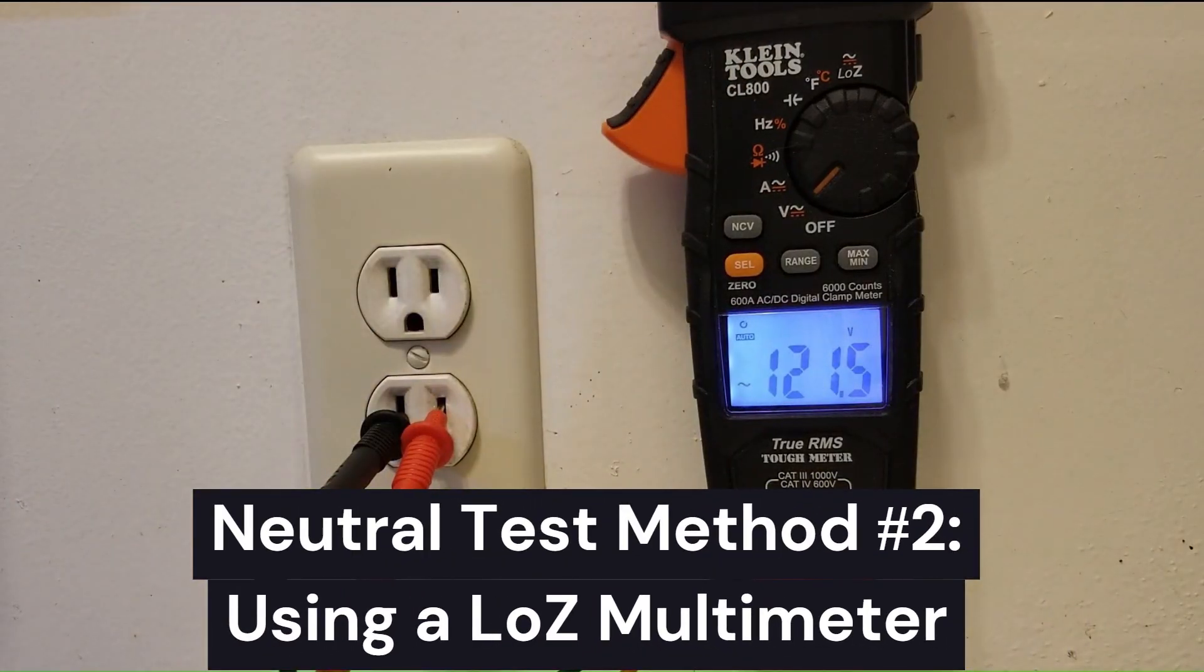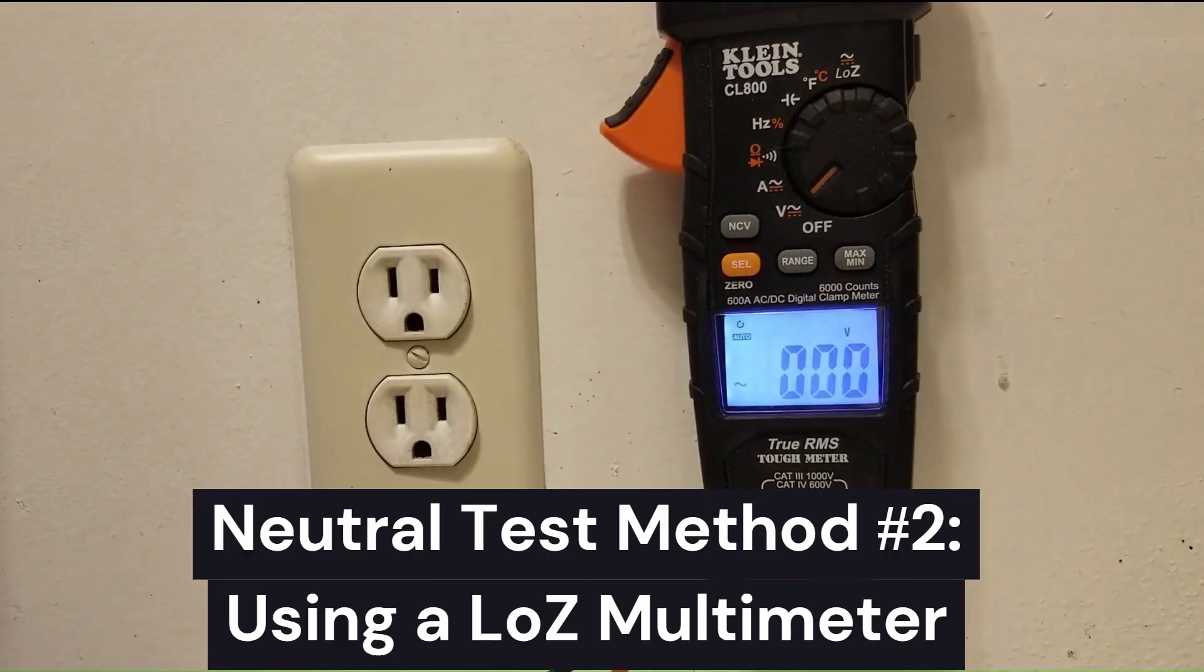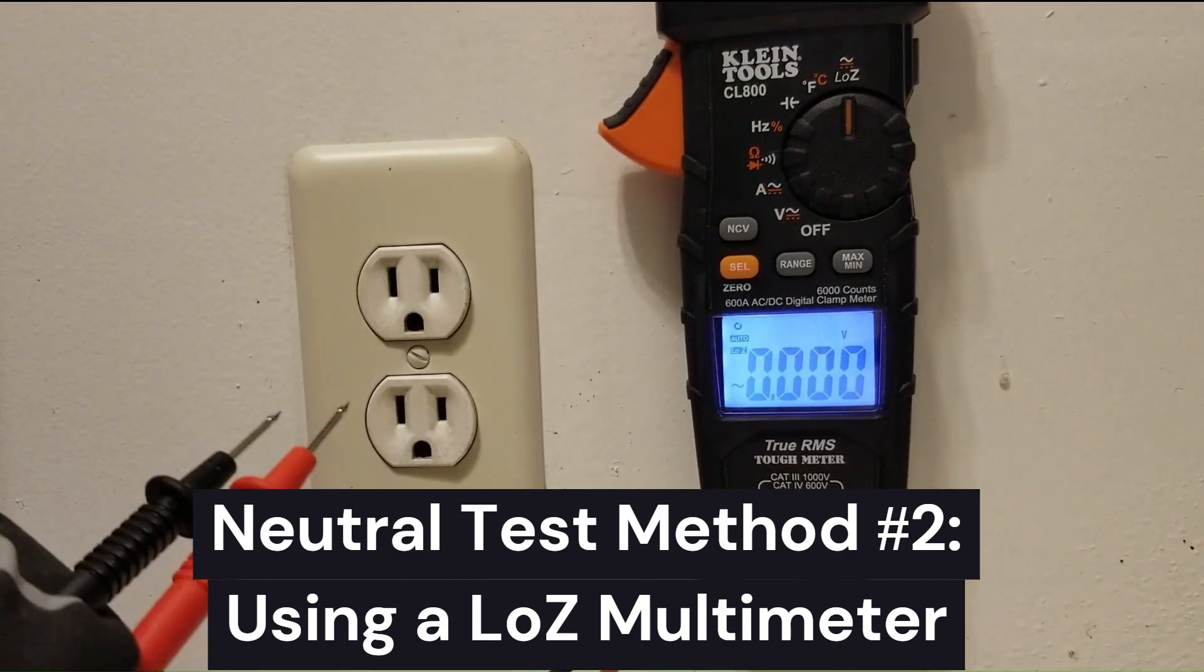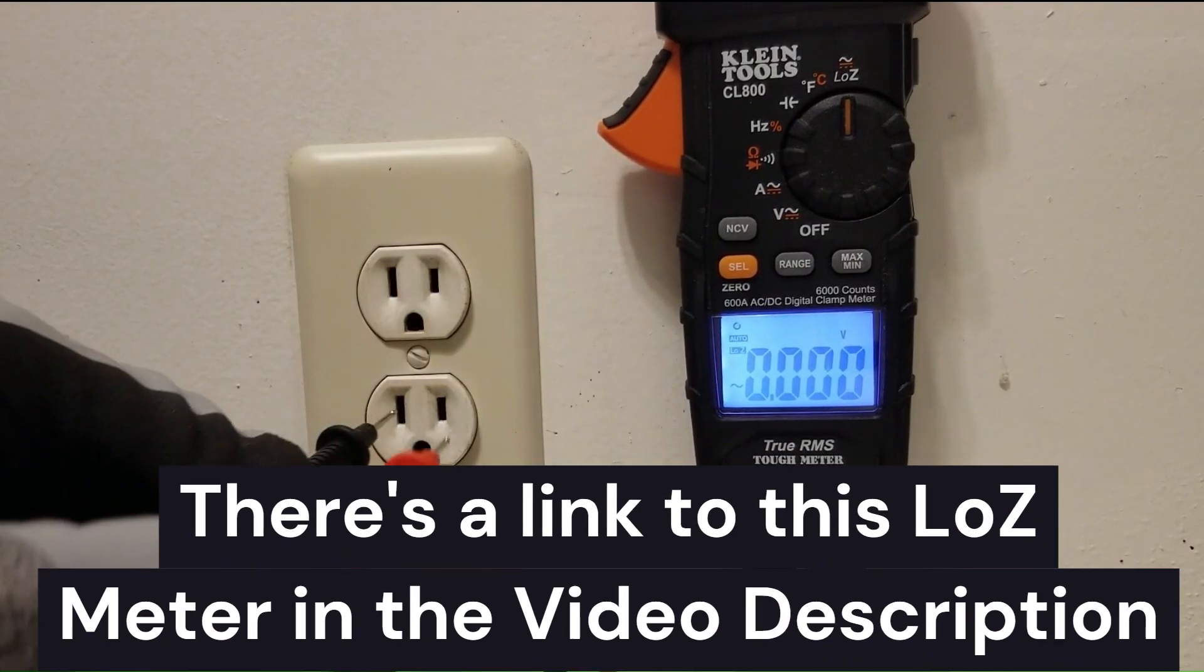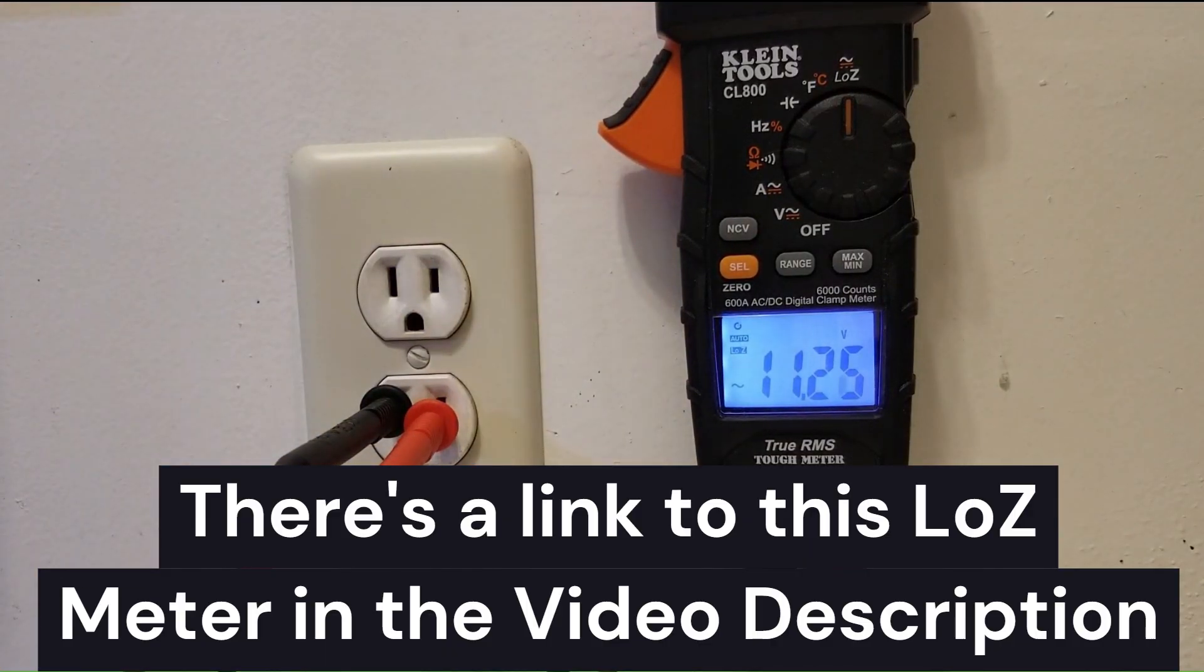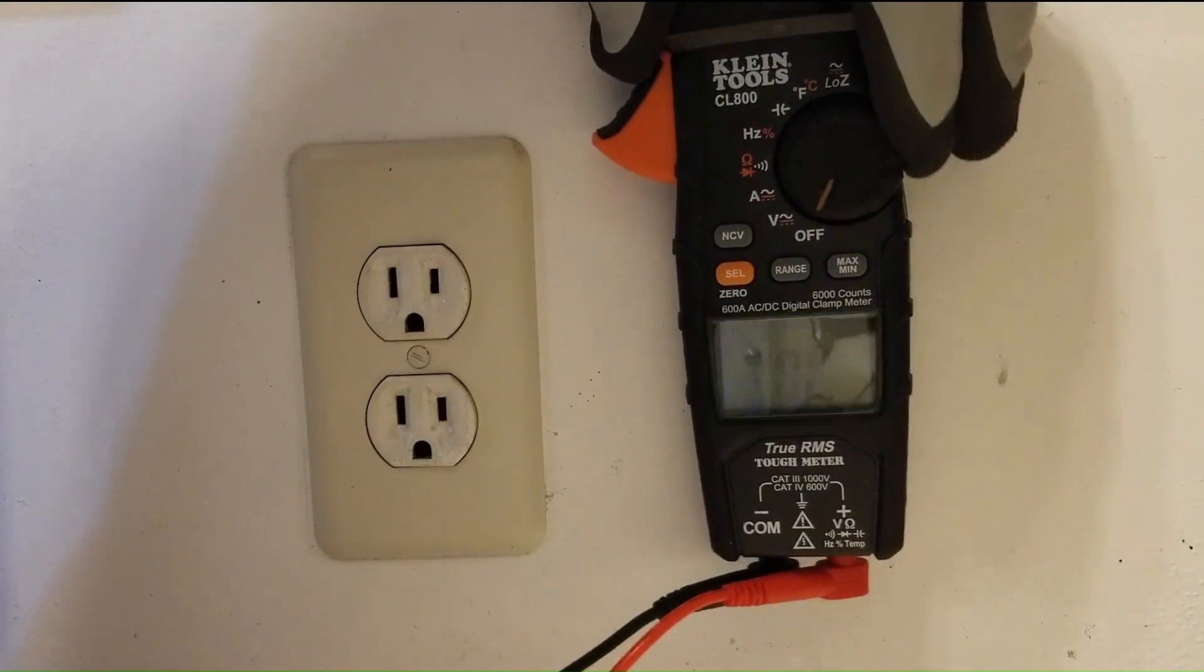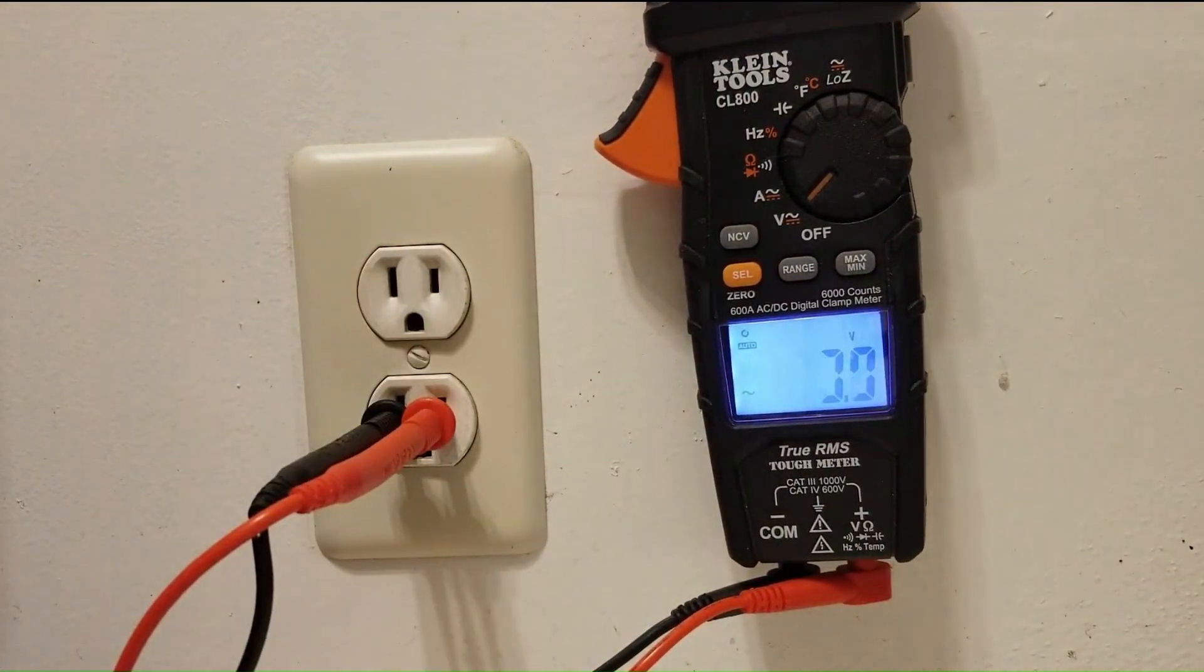So how would you test an outlet like this if you didn't know that it had an upstream loose connection that only failed under load? Well, you could use something called low Z here. I'm going to switch this to low Z mode and this inserts a resistance in the circuit, a low resistance or low impedance. That low resistance is about 3.2 kilohms, which is going to be typically very low compared to the upstream loose connections that can cause issues like this. So now let's see what we get on low Z. So now we're only reading 11.2 volts. So this low Z mode tells us that we have an issue with this outlet, whereas on normal volt reading mode, it says we have a good outlet.